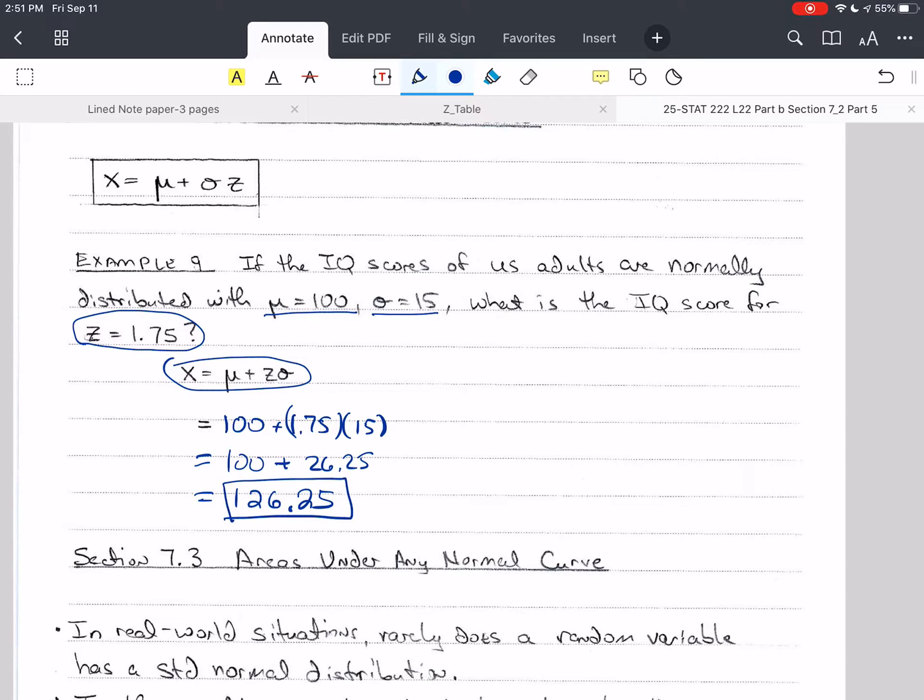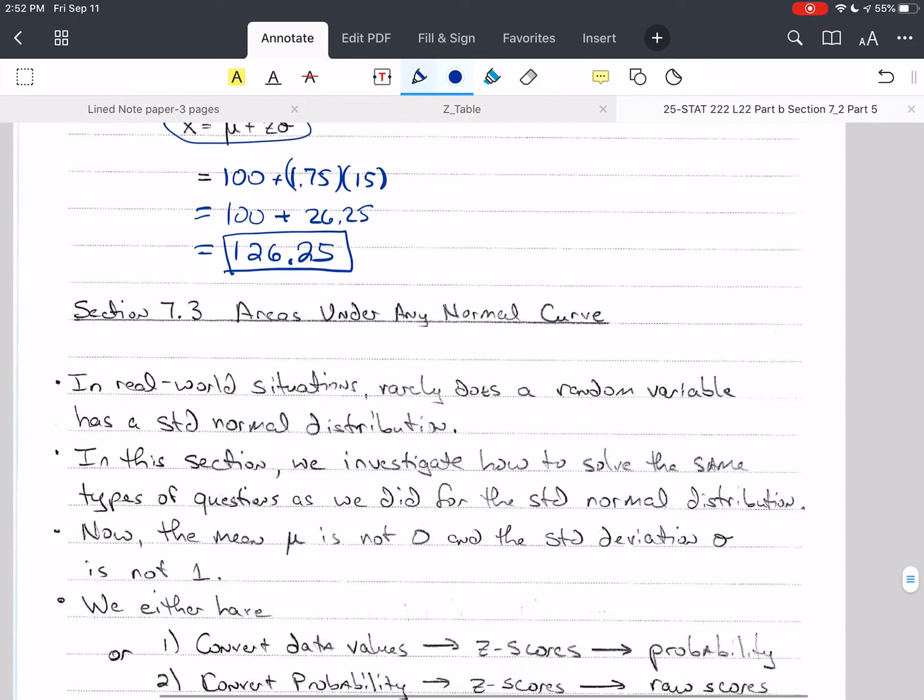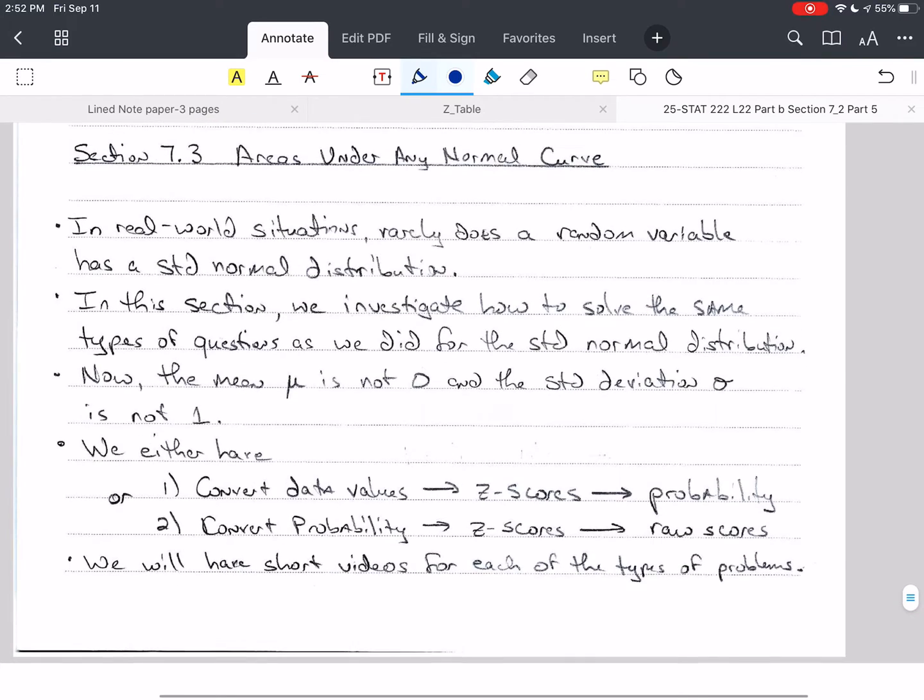So that would be the IQ score that is 1.75 standard deviations above the mean. That covers everything we can do with the standard normal distribution as far as solving problems and answering questions. Now we need what we just learned in section 7.2 to do anything in section 7.3. This body of knowledge and set of skills that you need from 7.2, you need them for 7.3, 7.4, and 7.5 as well.